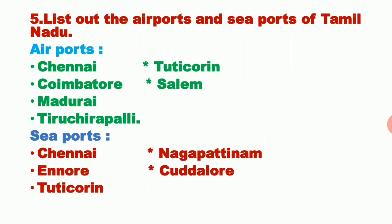The major seaports of Tamil Nadu are Chennai, Ennur, and Tuticorin. The small and medium seaports include Nagapattinam and Cuddalore, among others.